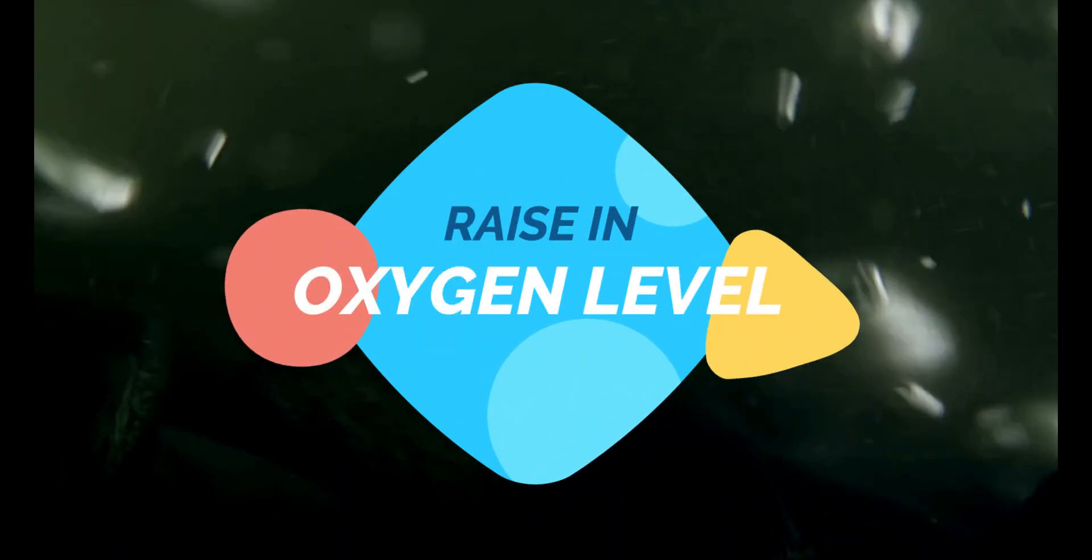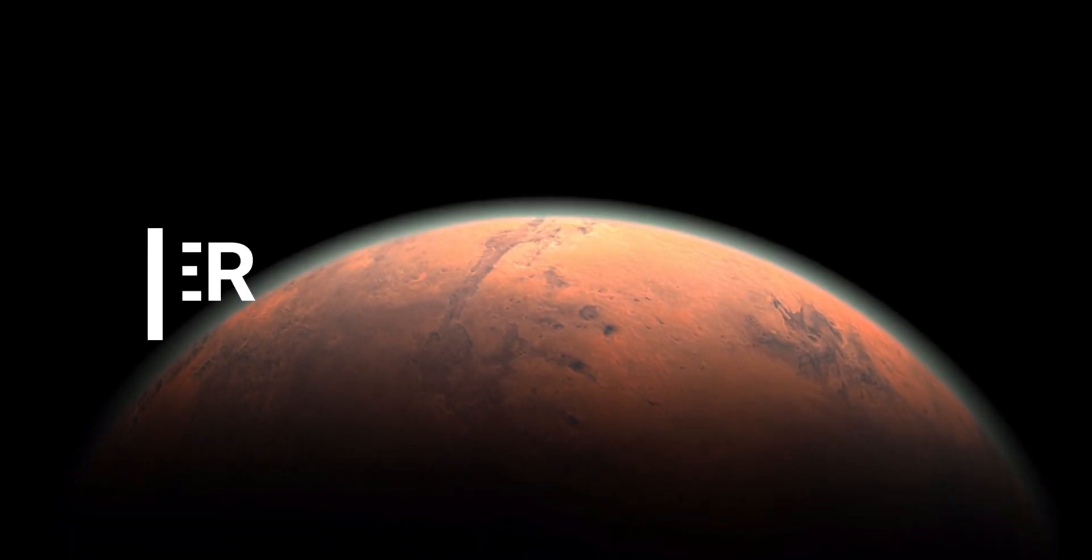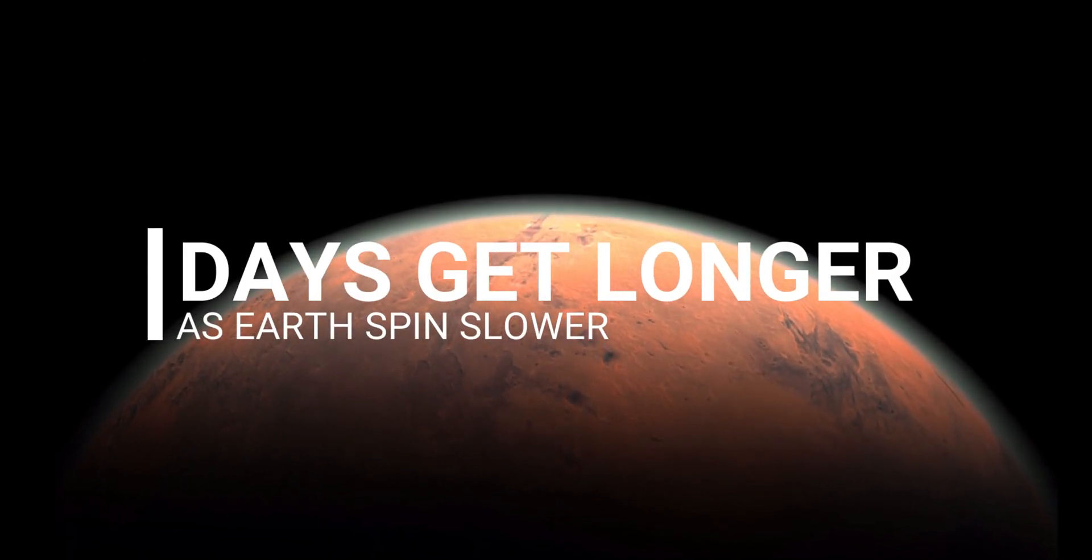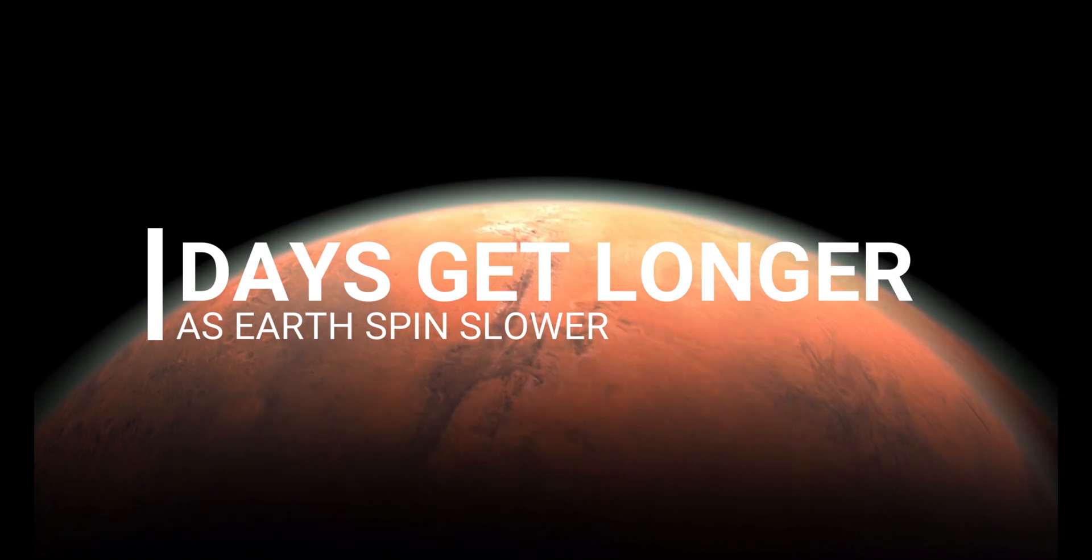Over the next billion years, oxygen levels continue to rise and the planet starts to spin slower. Days get longer. Then, the length of the day is about 22 hours long.